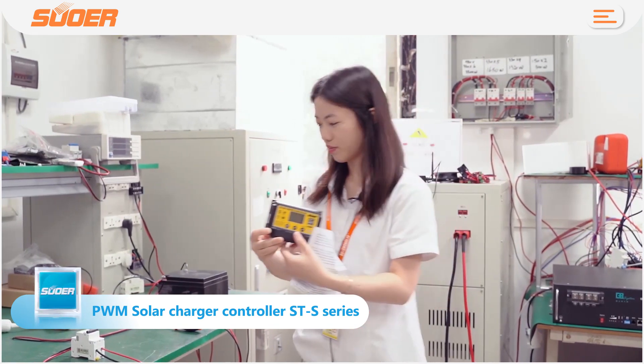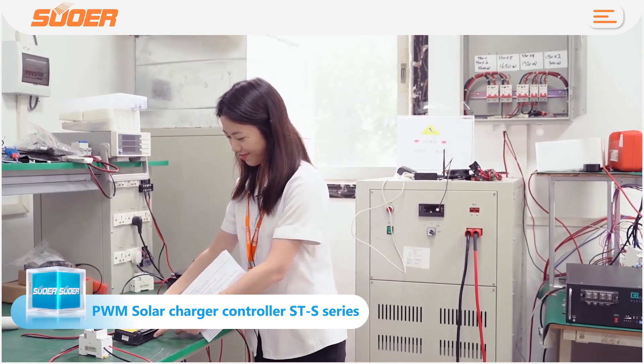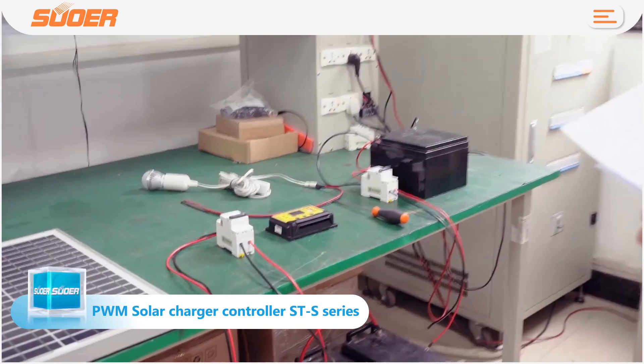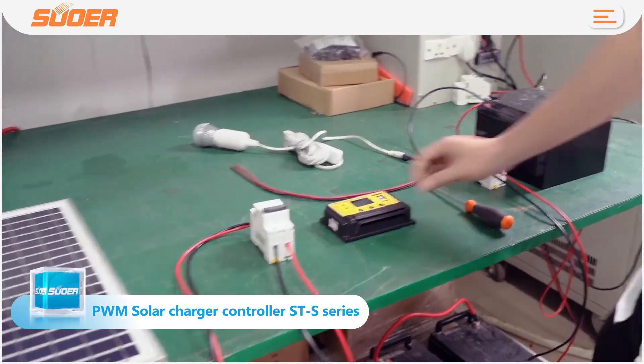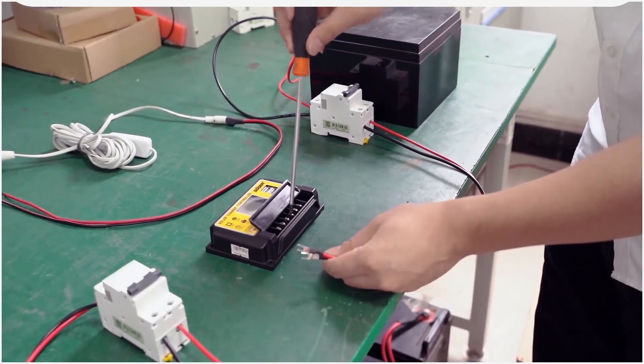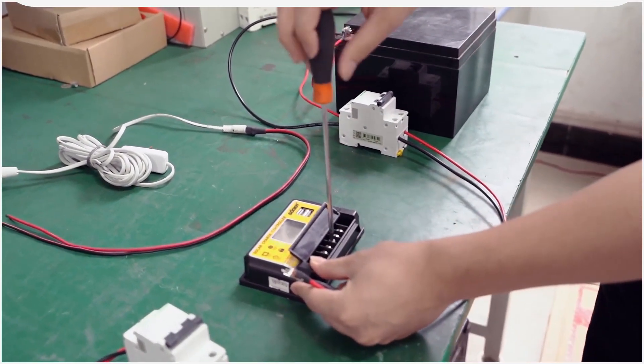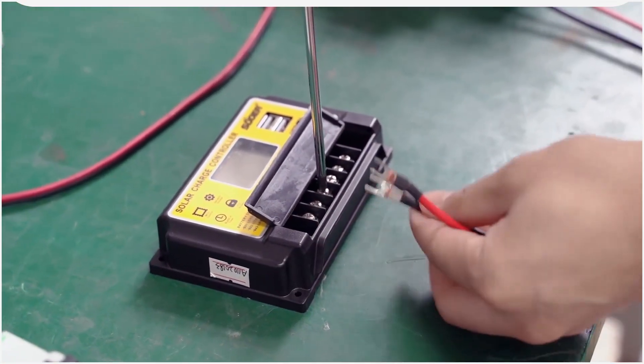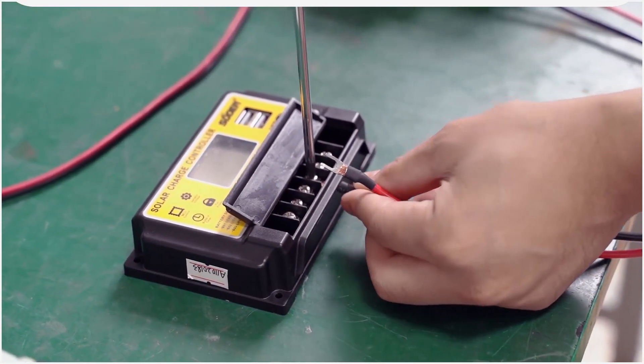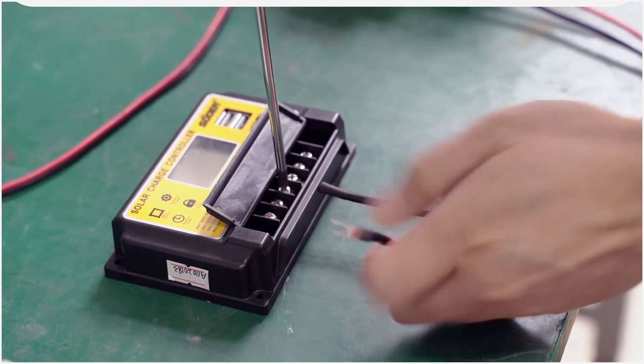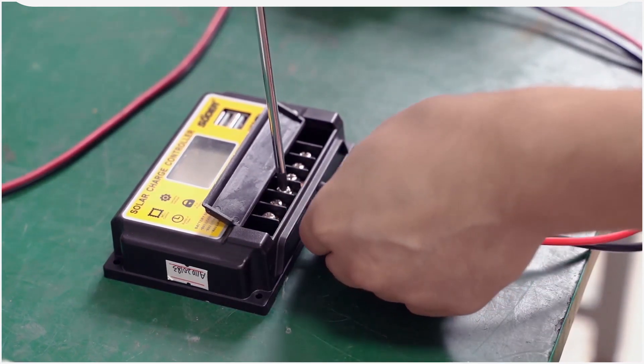This controller has three battery charge settings preset: AGM battery, lithium-ion battery, and lithium iron phosphate battery. According to the type of battery, it has a power-off memory function which can remember the setting when the user powers on next time.